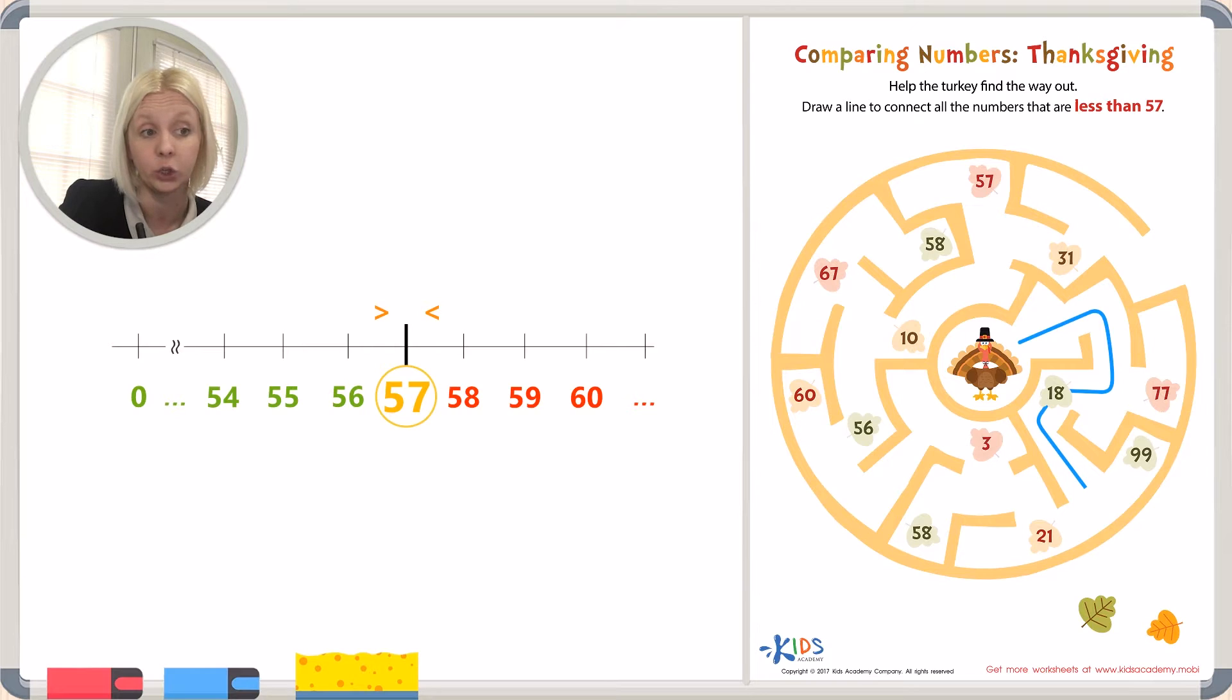We're going to go around this way. That's less than 57. Now we can either go to 58 or to 3. Which one is less than 57? Don't get confused here. 3 is less than 57.